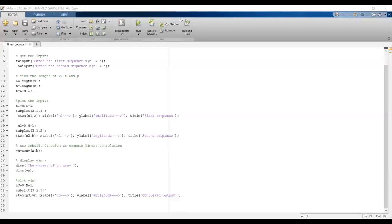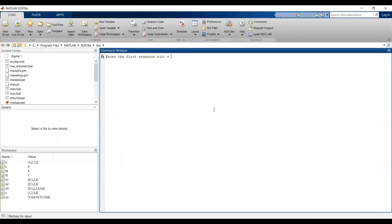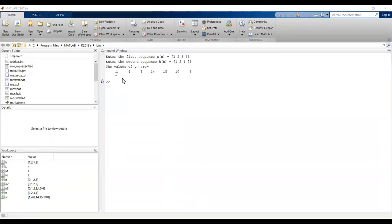After typing this program, we run it using the run button, then pass the input. We give the same input discussed in the calculation: x(n) equals 1, 2, 3, 4 and the second input is 1, 2, 1, 2. We already computed y(n) and now verify with this output: 1, 4, 8, 14, 15, 10, 8.